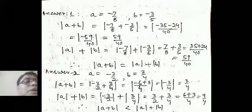Mod A plus mod B is equal to absolute value of minus 7 by 8 plus absolute value of minus 3 by 5. So 7 by 8 plus 3 by 5 is equal to 35 plus 24 by 40. That is equal to 59 by 40. Therefore it proves. Mod A plus B is equal to mod A plus mod B.